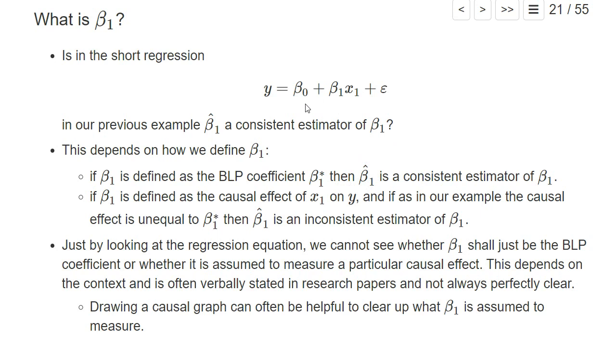However, if beta 1 is defined as a particular causal effect of x1 on y, then it is not so clear. For example, in our simulation example, this causal effect was different than the coefficient of the best linear predictor, and so the OLS estimator would be an inconsistent estimator of beta 1. It really depends on what we mean by beta 1, and just looking at the regression equation, we don't really see so much what this beta 1 shall mean.